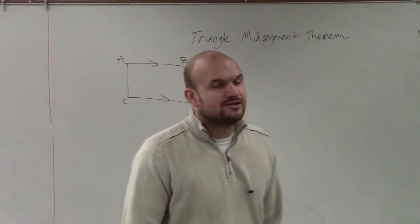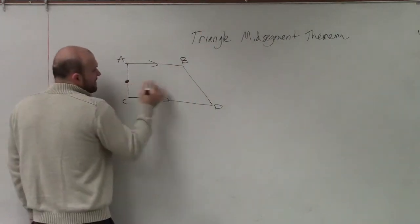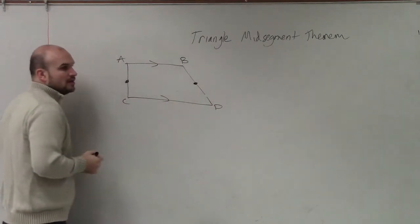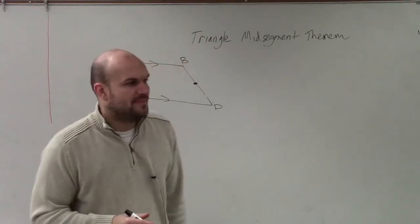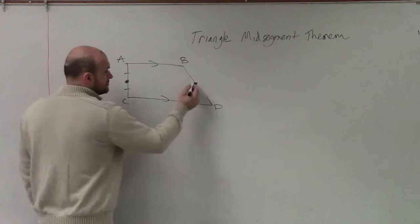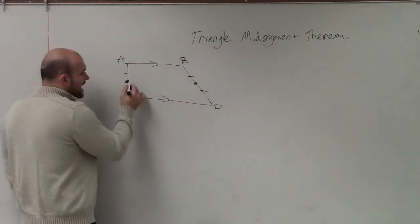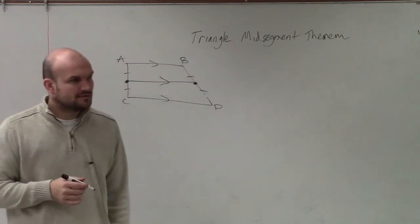So when you had a trapezoid like this, if you guys remember, if we can find the mid-segment of two of our legs, then the mid-segment, that means they cut it in half. If they cut these in half, this mid-segment is parallel to the other bases.